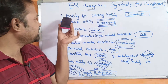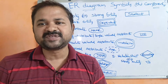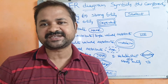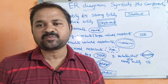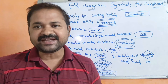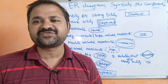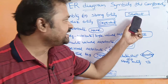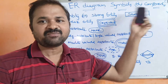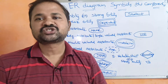The first symbol is for entity. Entity is an object or thing which is distinguishable from other objects. For example, student is an entity and staff is an entity. Every entity has its own properties. Entity is represented by a rectangle, and within the rectangle we place the name of the entity — for example, student.